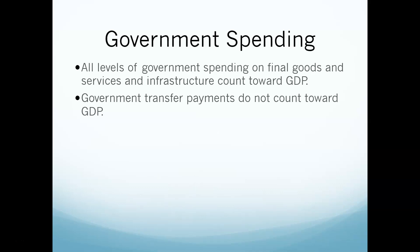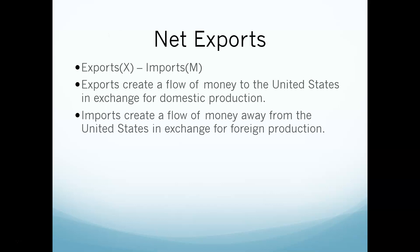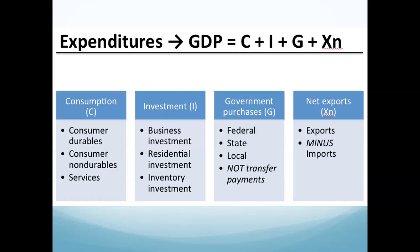Government spending — the big G — is any time the government spends money on goods or services: paying employees, buying aircraft carriers, buying copy machines. However, transfer payments like social security payments or food stamps do not count, because that's merely moving money around within the economy — taking money from your paycheck and giving it to somebody else, so no good or service is being produced. Finally, net exports is exports minus imports. If you export goods, money comes in and counts towards GDP. If we import stuff, money goes out and counts against GDP.